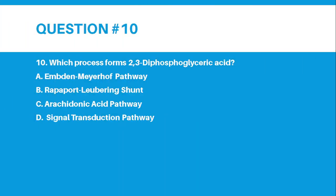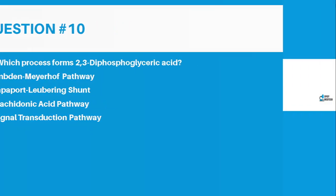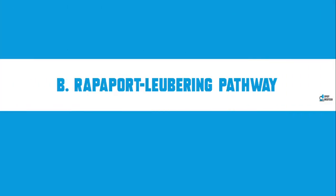Number 10: Which process forms 2,3-diphosphoglyceric acid? Letter A, Embden-Meyerhof Pathway. Letter B, Rapoport-Luebering Shunt. Letter C, Arachidonic Acid Pathway. Letter D, Signal Transduction Pathway. The answer for number 10 is Letter B, Rapoport-Luebering Pathway or Shunt.